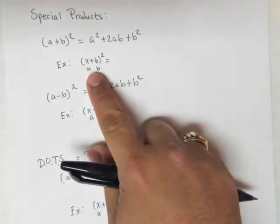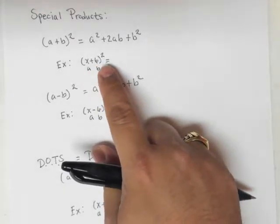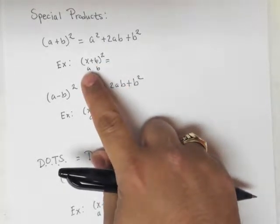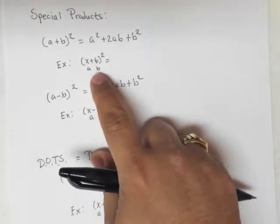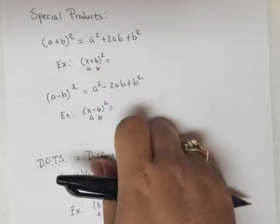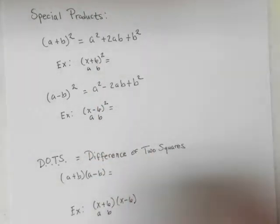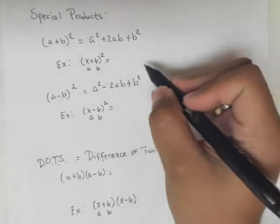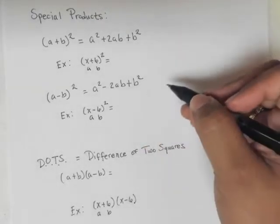Here's an example: (x+6)². In this case, x is our a and 6 is our b. I'm just going to plug this in normally, and then from here on out, we can really just do this in our head.